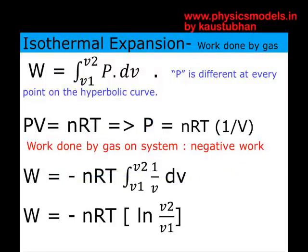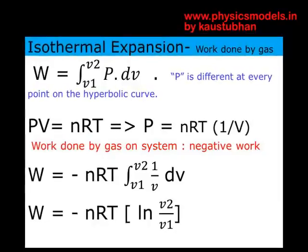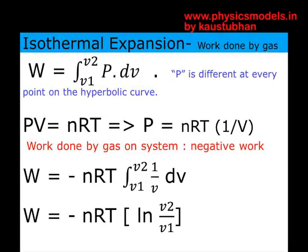We now come to the area under the curve for isothermal expansion. W is the integral of P·dV. Since PV = nRT for an ideal gas, P becomes a function of V: P = nRT·(1/V). Inside the integral we have the integral of (1/V)·dV, and nRT comes out of the integral because R is a constant and in an isothermal expansion T is also constant.